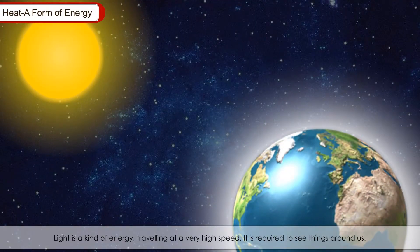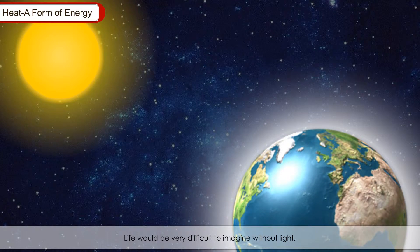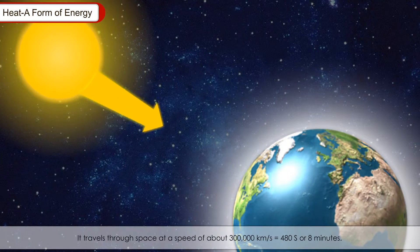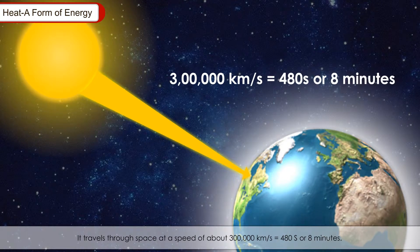Light is a kind of energy, travelling at a very high speed. It is required to see things around us. Life would be very difficult to imagine without light. It travels through space at a speed of about 3 lakh km per second, taking 480 seconds or 8 minutes from the Sun to Earth.